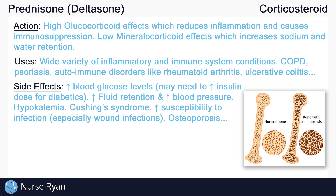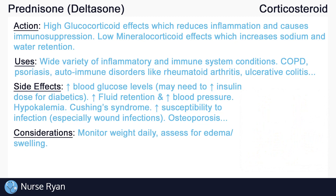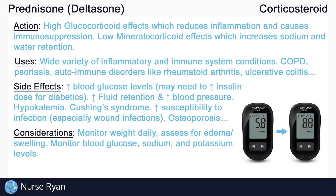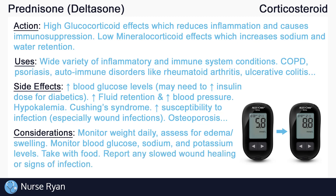Here are some things we can do to help manage corticosteroid use: Monitor weight daily and assess for signs of edema or swelling. Monitor glucose levels carefully in diabetic patients. If needed, monitor sodium and potassium levels too. Take prednisone with food and report any slowed wound healing or signs of infection to your healthcare provider. Do not stop taking prednisone abruptly — instead, gradually taper off the dose as instructed by the healthcare provider. Rapid discontinuation can cause an adrenal crisis, which can be life-threatening.